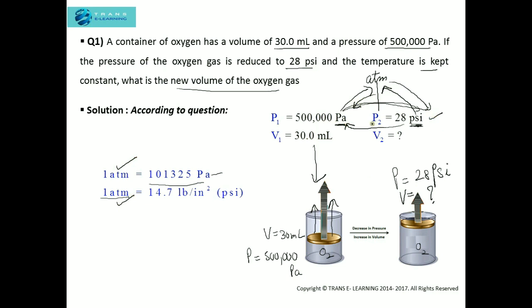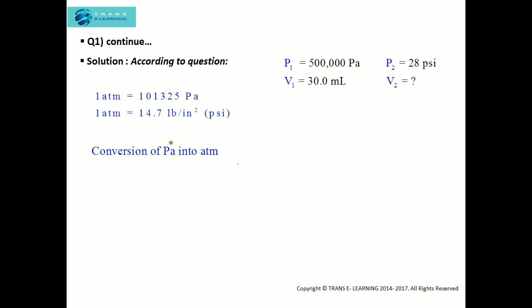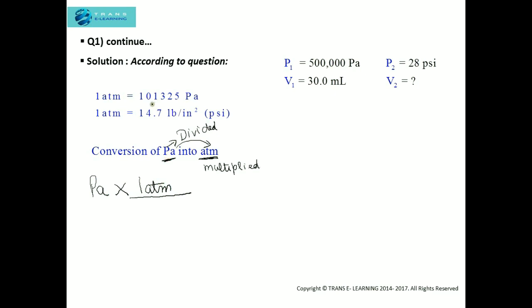First, we convert Pascal into atmosphere. As shown in the unit conversion video, the unit being converted is divided and the target unit is multiplied. We write 500,000 Pascal multiplied by 1 atmosphere divided by 101,325 Pascal.